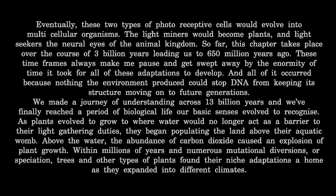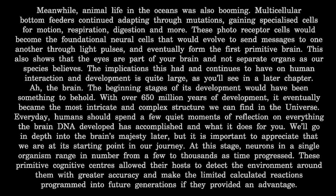As plants evolved to grow to where water would no longer act as a barrier to their light-gathering duties, they began populating the land above their aquatic womb. Above the water, the abundance of carbon dioxide caused an explosion of plant growth. Within millions of years and numerous mutational diversions — or speciation — trees and other types of plants found their niche adaptations as they expanded into different climates. Meanwhile, animal life in the oceans was also booming. Multicellular bottom feeders continued adapting through mutations, gaining specialized cells for motion, respiration, and digestion. These photoreceptor cells would become the foundational neural cells that evolved to send messages to one another through light pulses, eventually forming the first primitive brain. This also shows that the eyes are part of your brain and not separate organs.